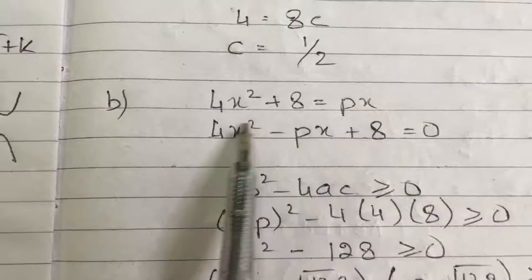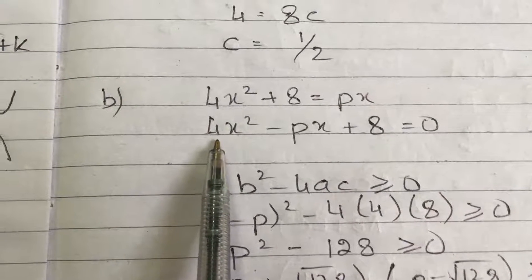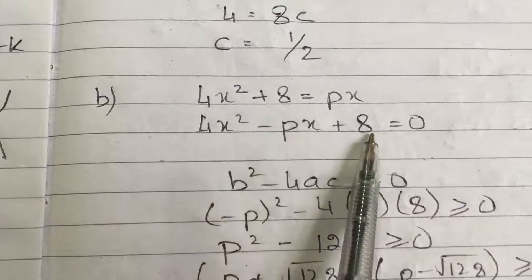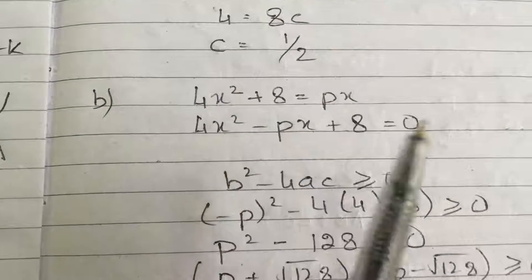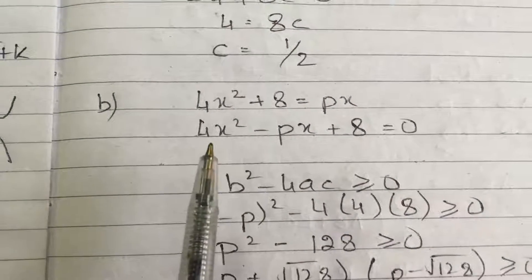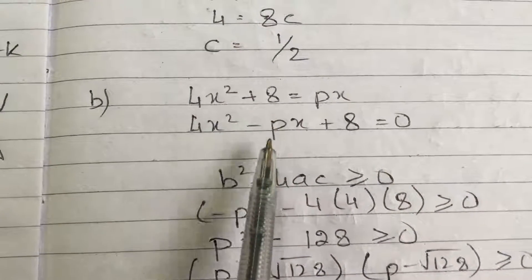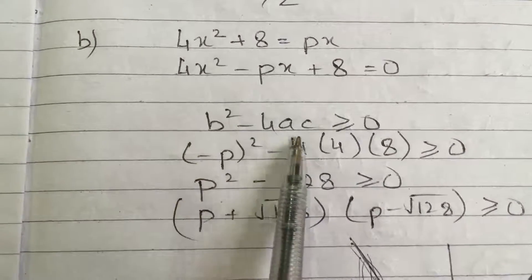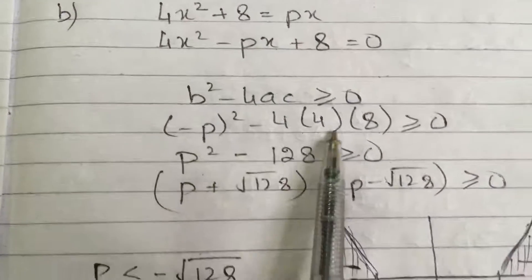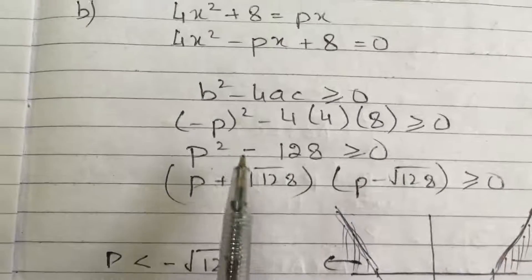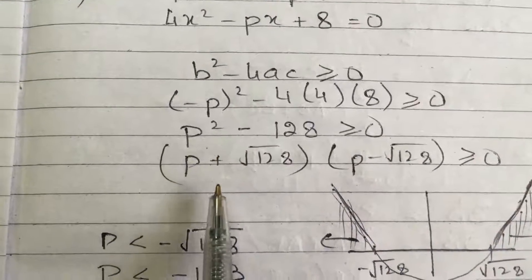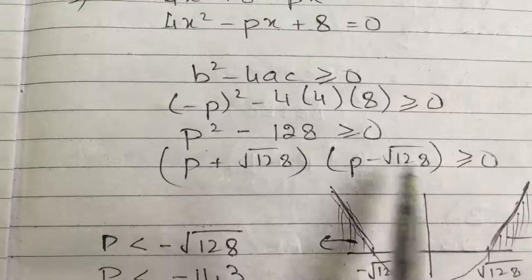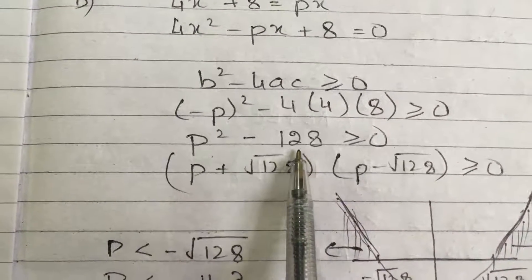We have rearranged this equation. Now this is my a, b and c which is ax squared plus bx plus c. So my a is 4, my b is minus p, my c is 8. So I am substituting this in this inequality. Now I am writing it in the form a plus b, a minus b.